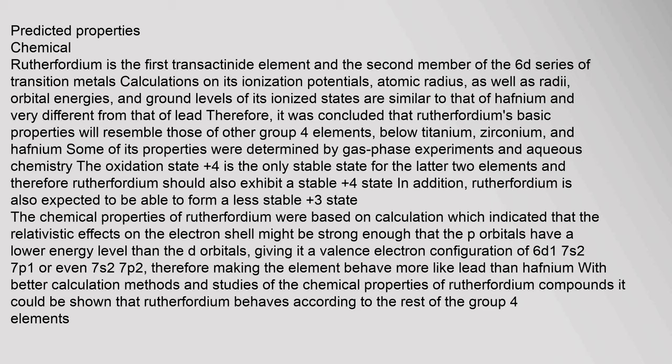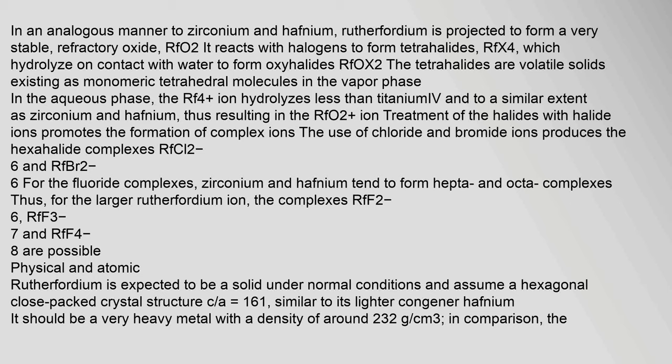The oxidation state +4 is the only stable state for the latter two group 4 elements, and therefore rutherfordium should also exhibit a stable +4 state. In addition, rutherfordium is also expected to be able to form a less stable +3 state. Early chemical property calculations indicated that relativistic effects on the electron shell might be strong enough that the p orbitals have a lower energy level than the d orbitals, giving it a valence electron configuration of 6d¹7s²7p¹ or even 7s²7p², making the element behave more like lead than hafnium. With better calculation methods, it could be shown that rutherfordium behaves according to the rest of the group 4 elements. It is projected to form a very stable, refractory oxide RfO₂, and reacts with halogens to form tetrahalides RfX₄, which hydrolyze on contact with water to form oxyhalides RfOX₂.